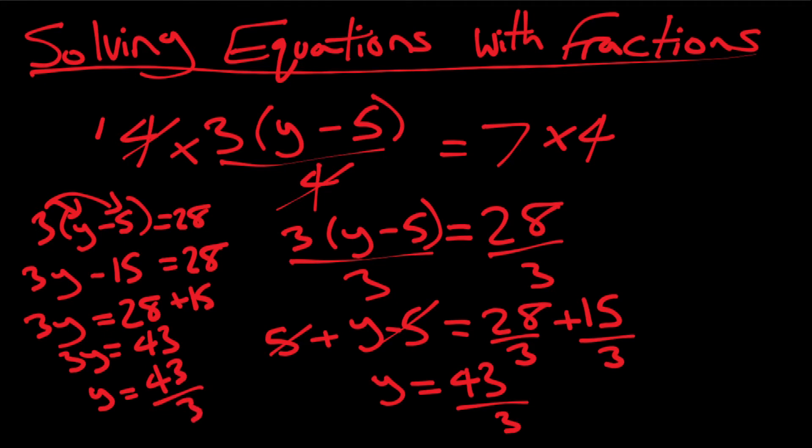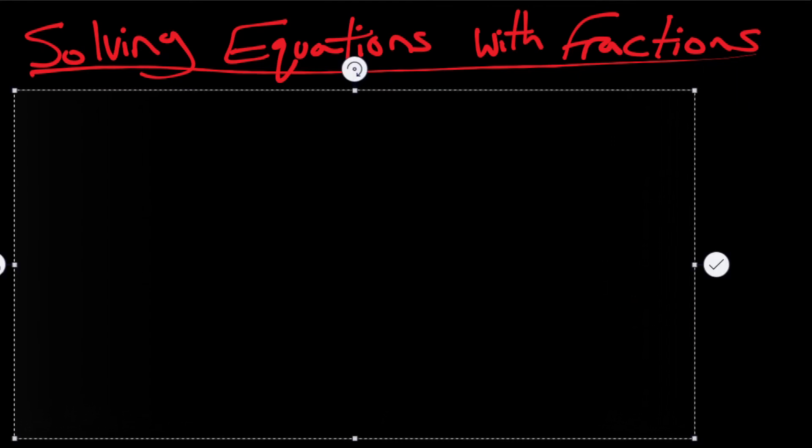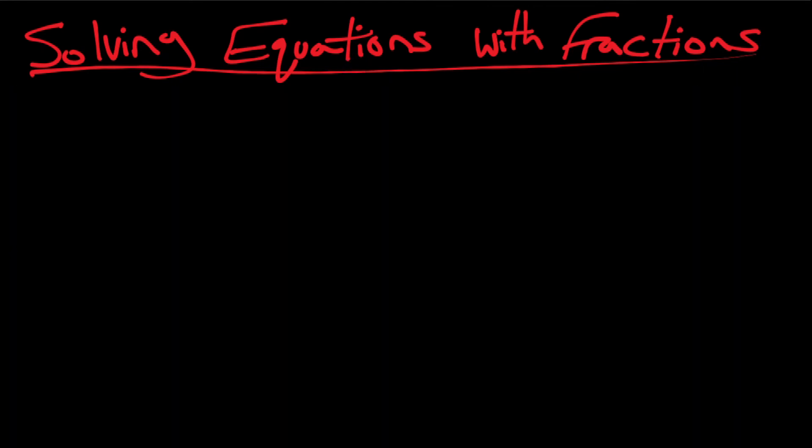So that gives me three y equals 43. Now I can just do the division from both sides, and then that will give me y equals 43 over three. So yeah, different methods, same result. Let's follow the rules. You should be fine.